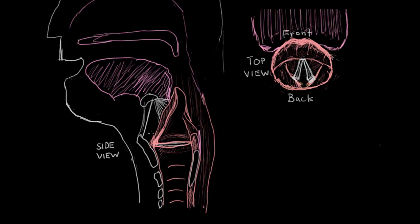Here's a side view of the human head, the throat, and the esophagus. In the throat you can see we have the trachea, and we have the larynx, also known as the voice box. Above it we have the epiglottis and the aryepiglottic folds.